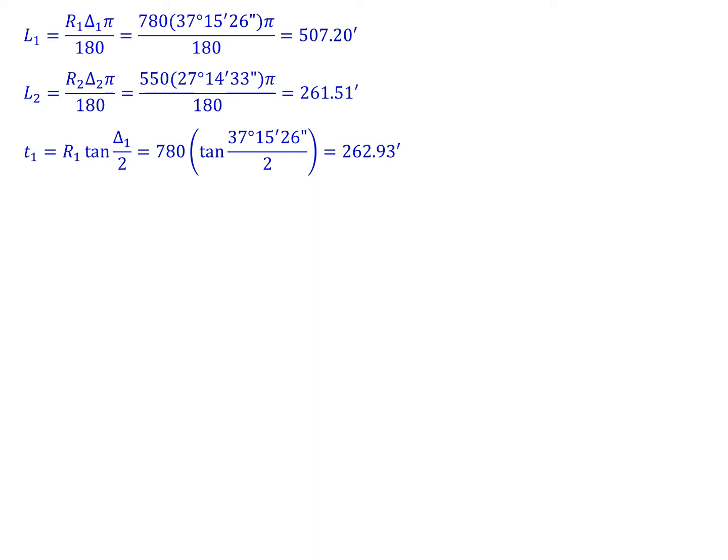Now for t1—this is the small t associated with the individual curve, not the overall compound curve system. This is R1 times the tangent of delta 1 divided by 2, so 780 times the tangent of 37 degrees 15 minutes 26 seconds divided by 2 gives us a t1 of 262.93 feet.